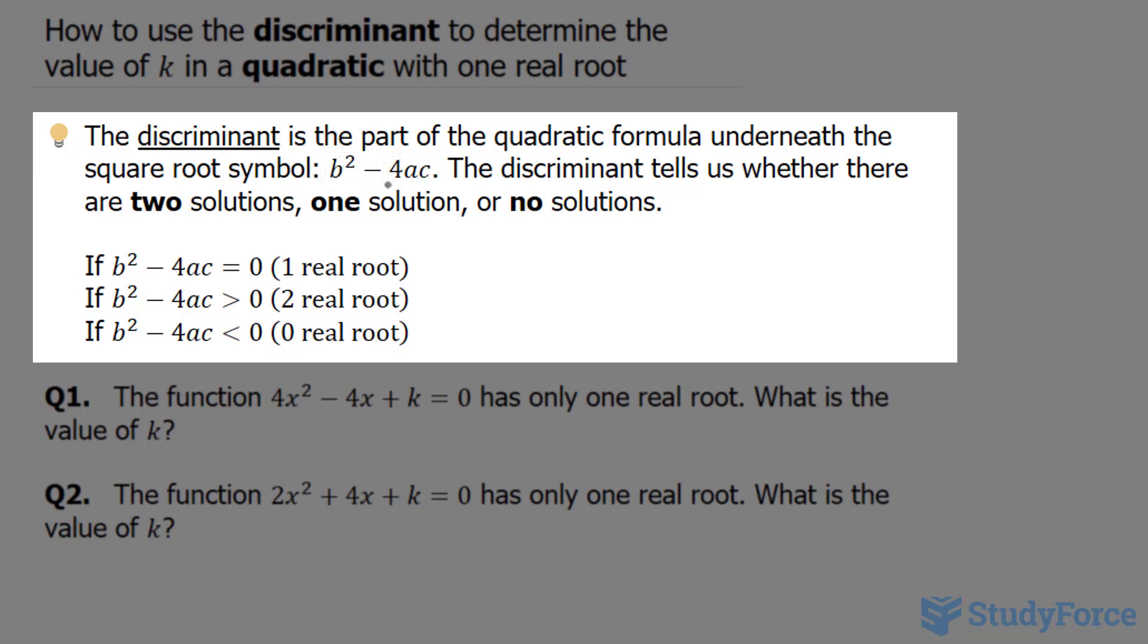The discriminant tells us whether there are two solutions, one solution, or no solution at all. If your discriminant equals zero, you end up with one real root. If it's greater than zero, you have two. And if it's less than zero, you have none.